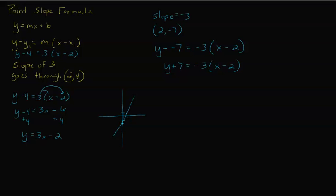Now let's turn it into slope intercept form. Using the distributive property: negative three times x is negative 3x, and negative three times negative two is positive six. So we have y plus seven equals negative 3x plus six. Subtract seven to get y by itself: y equals negative 3x minus one. Now we can easily graph this — go to negative one for the y-intercept, then go down three and over positive one since the slope is negative.